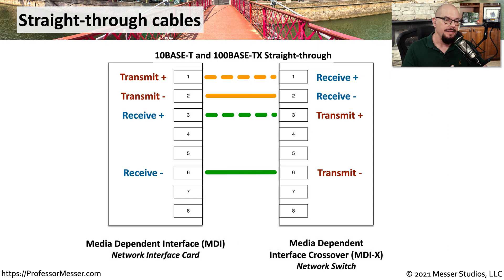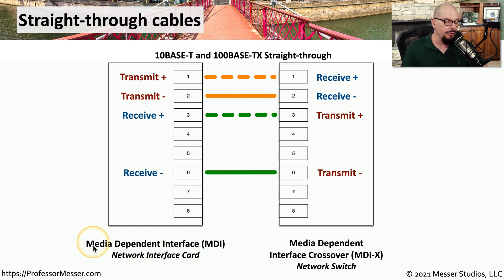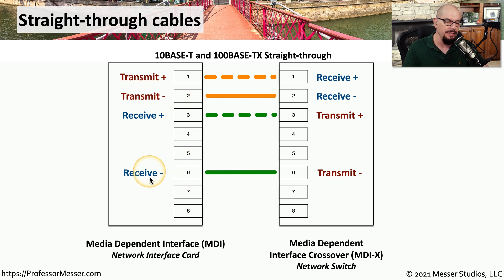This is a wire map of 10BASE-T and 100BASE-T straight-through cables. You can see that there are only two pairs being used, because only two pairs of wires are used for 10 megabit and 100 megabit networking. The block on the left is a network interface card — the adapter inside your computer — technically referred to as a media dependent interface, or MDI. Pin 1 is transmit plus, pin 2 is transmit minus, pin 3 is receive plus, and pin 6 is receive minus.